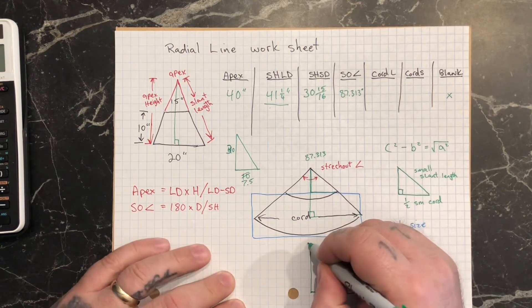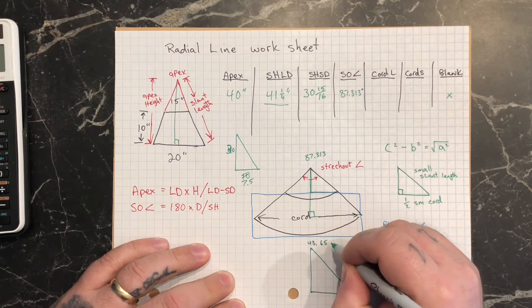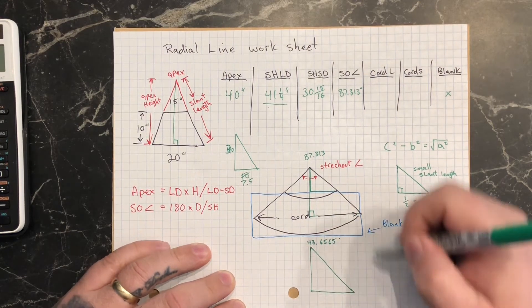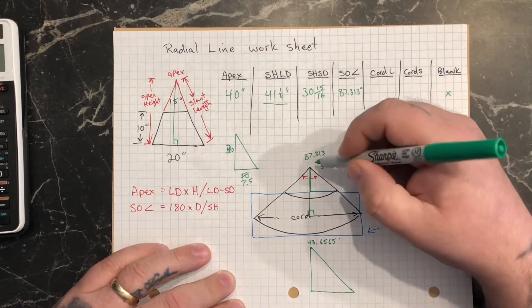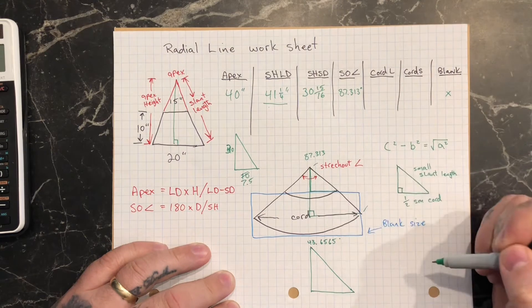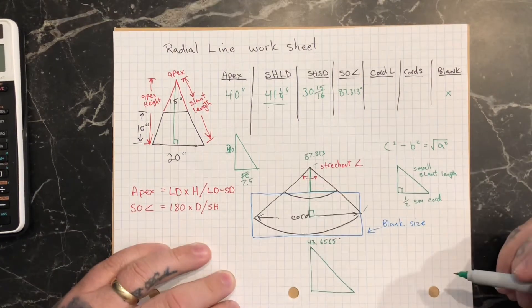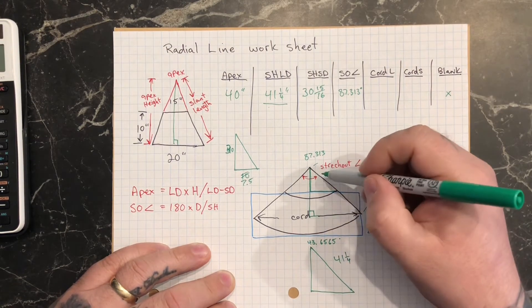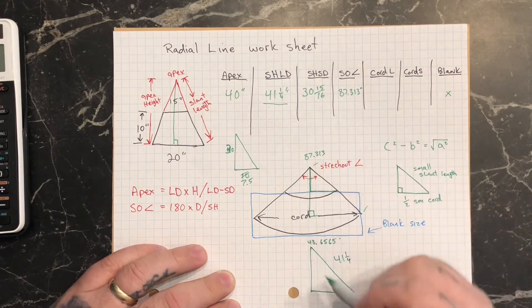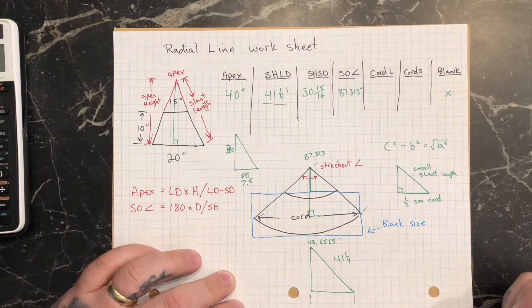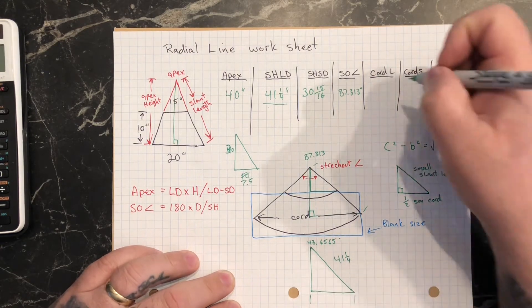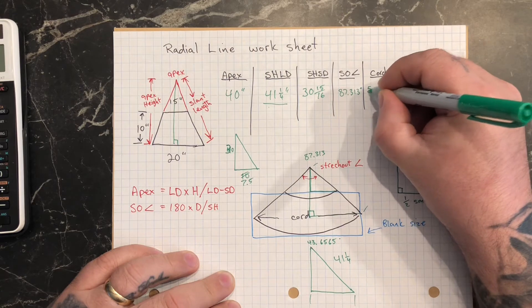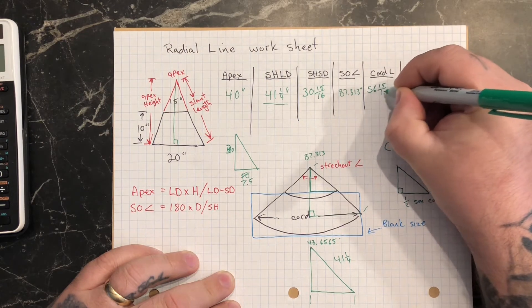That's our angle. We have a hypotenuse length here, because that's going to be this length of the triangle, which is our slant length. From here to here is our slant length, because that's the length we use to swing this whole arc here. So that's going to be 41 and a quarter. And then if we use the sine function and do the math on there, we can find out this length here. And then we'll multiply it by 2 to give us a total chord length of 56 and 15 sixteenths.